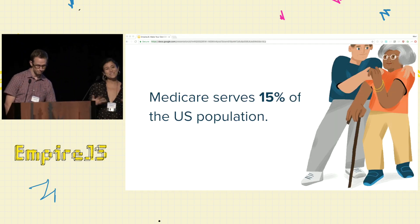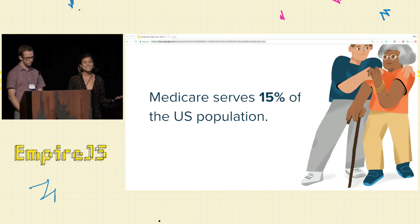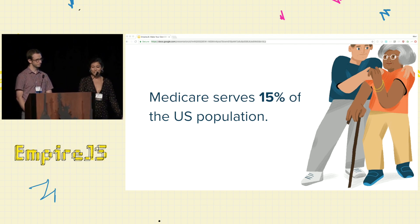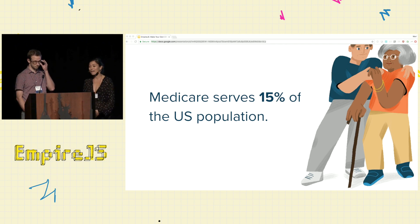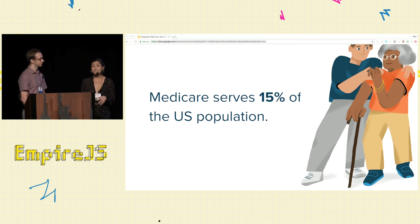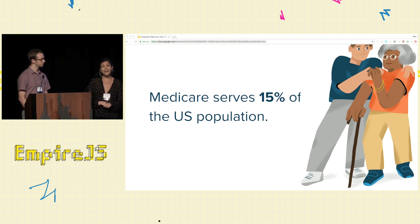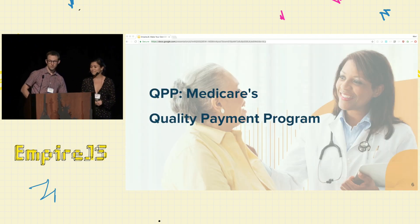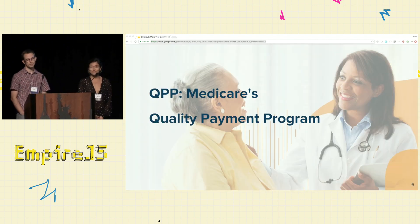A little primer on what Medicare is. As many of you may be aware, the United States does not have socialized healthcare, but there is Medicare, which provides health insurance for the elderly. It serves about 15% of the American population — around 44 million beneficiaries. Both Mari and I work on the Quality Payment Program at Medicare, or QPP.